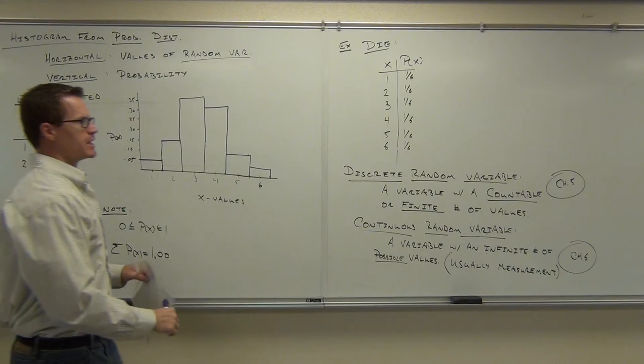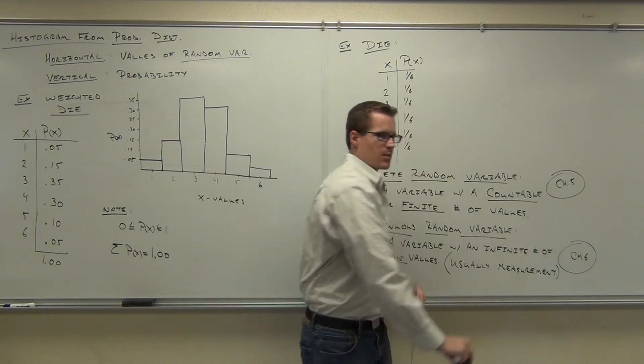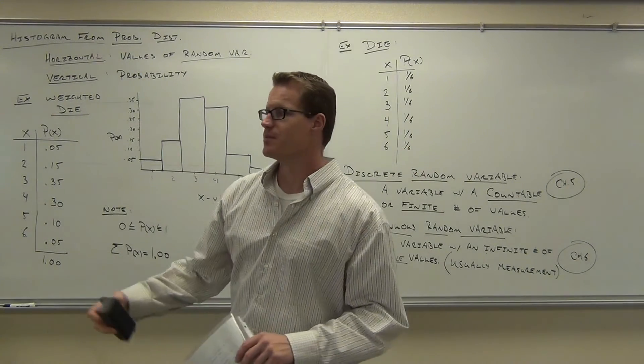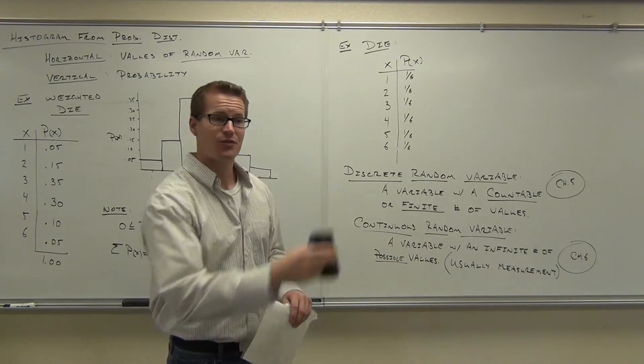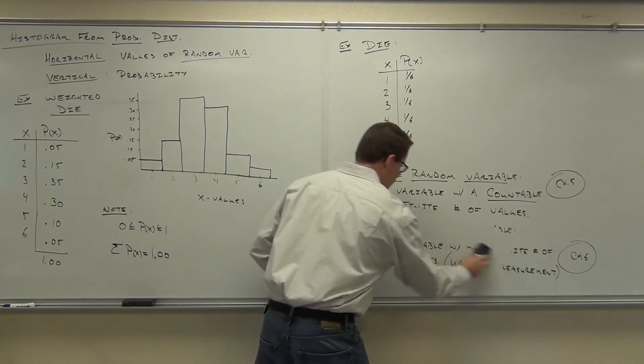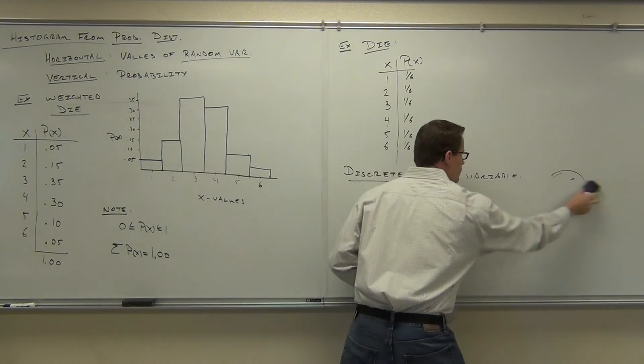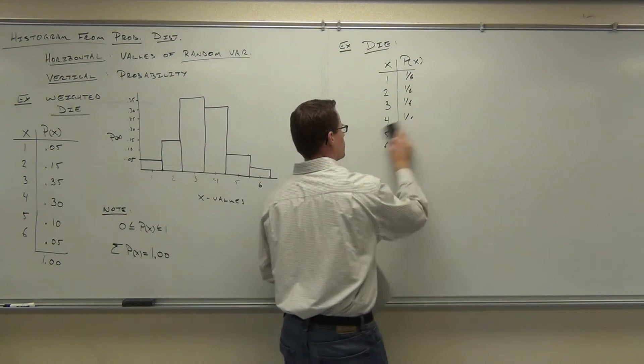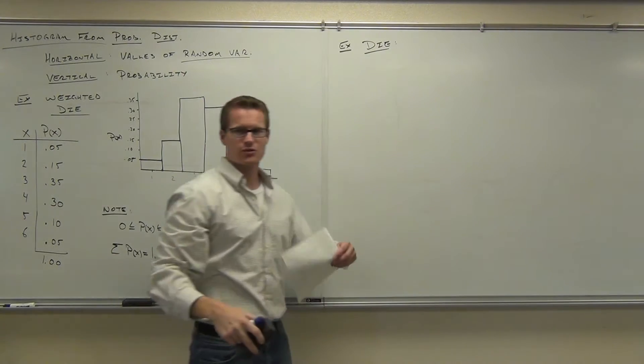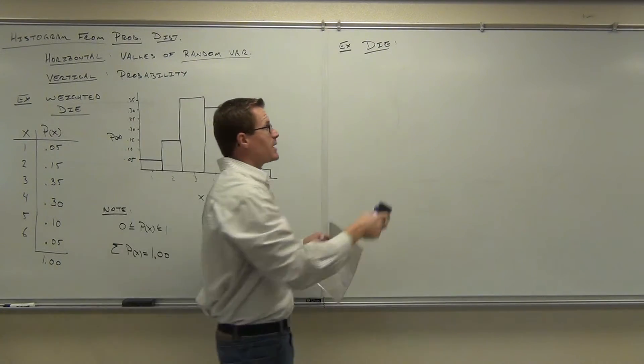What's interesting is that not only can we make a histogram out of our probability distribution, we can also find the mean and the standard deviation for this data. So we'll talk right now about how to find a mean from a probability distribution, and we'll draw some parallels from a frequency distribution, so this should be kind of nice for us.